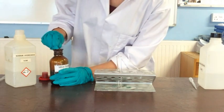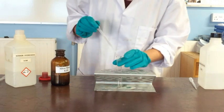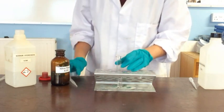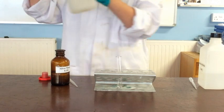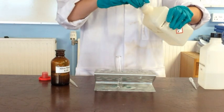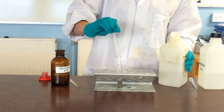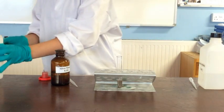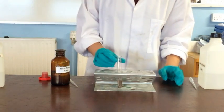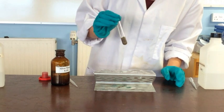First of all we're going to mix some silver nitrate with some sodium hydroxide. And that should have formed a brown precipitate which is silver oxide, there you go, you can see that there.